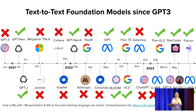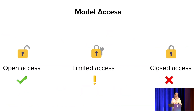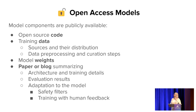So what is model access and what are the types? Model access is essentially a spectrum. On one extreme is open access, on the other is closed access, and somewhere in the middle is something we call limited access. In open access models, the model components are publicly available — this includes open source code, training data such as the source of the data and their distribution, and the data pre-processing and curation steps. The model weights are accessible for downloading and further training, and there's usually a paper or blog summarizing the architecture and training details.